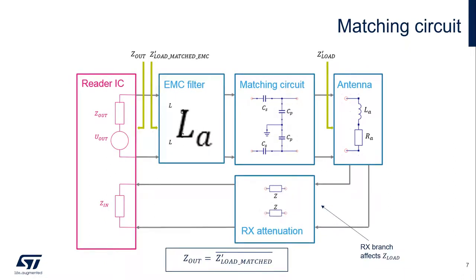The output of our reader is a 13.56 MHz square wave. In order to remove the high-frequency component of the output, an EMC filter is needed. This filter is typically a two-pole low-pass filter with a cutoff frequency of approximately 13.56 MHz. This will add both inductance and capacitance to the output that will also have to be compensated for in the matching circuit. Additionally, the RX attenuator will also add additional capacitance that needs to be adjusted for in the matching circuit as well.